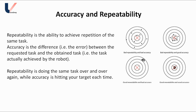In figure 3, repeatability is good because all of the results are very close to each other, but all these results are very far from the center point — our target — so accuracy is bad. Figure 4 is the best example: it has good repeatability because all results are very close to each other, and good accuracy because all results are very close to our target.